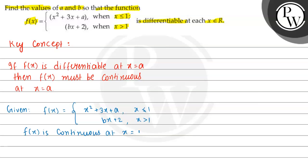Because the function is differentiable, we can say that the left hand limit should be equal to the right hand limit, and this should be equal to f(1). Here, LHL stands for left hand limit and RHL stands for right hand limit.